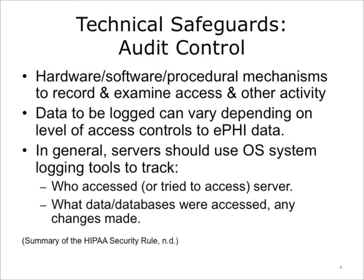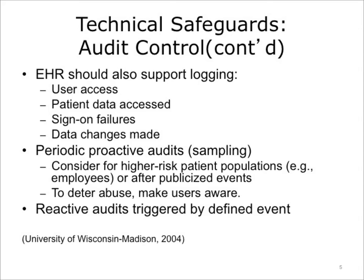What actually needs to be logged depends on the level of access controls to the ePHI data. However, there are some pretty consistent items. In general, your servers should use OS system logging tools to log who accessed or tried to access the server, what data or databases were successfully accessed, and any changes made. Your EHR software should support logging user access, logging data accessed, logging sign-on failures, and any changes to the data. Proactive audits should be performed periodically with the intent of sampling the data set to look for possible inappropriate use or activity. Log sampling does not have to be random — proactive audits can sample from the entire log population or from areas known to be of higher risk.